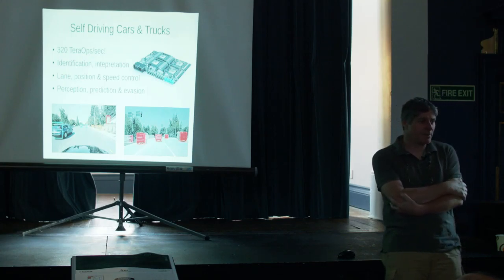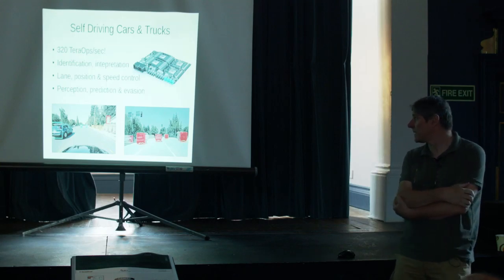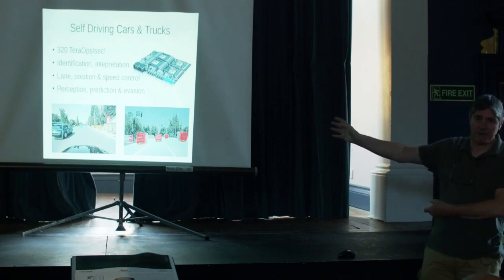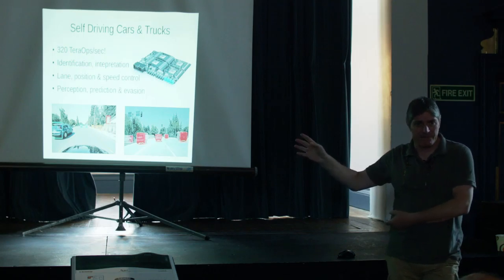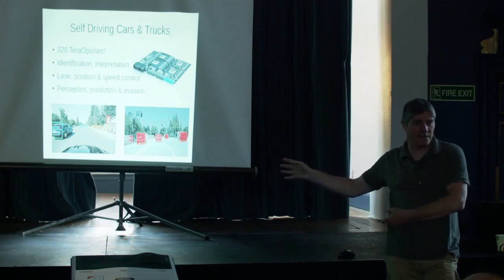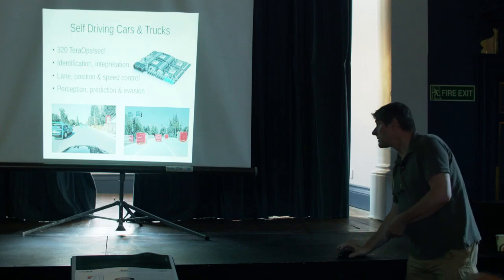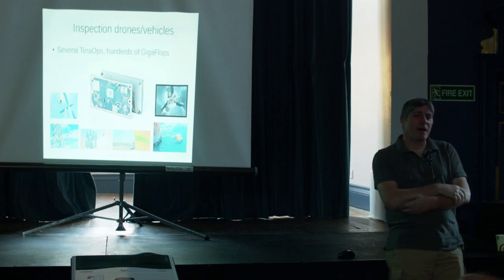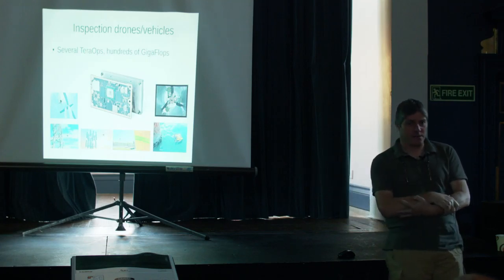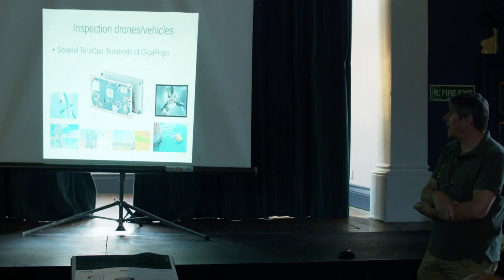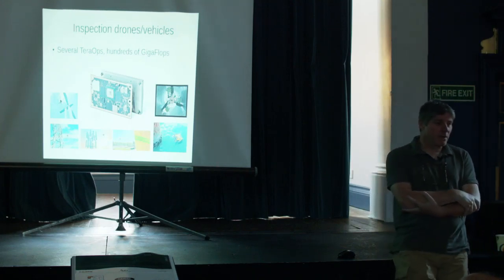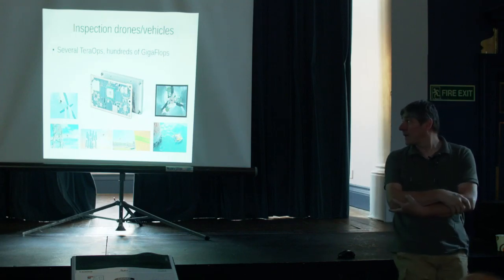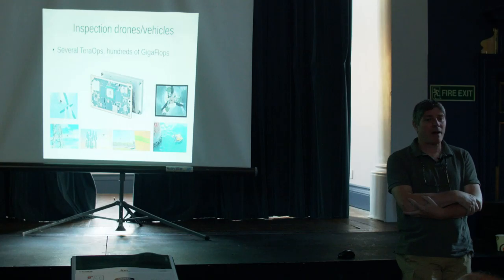It must also have perception and prediction — it needs to guess what's going to happen next, much like we unconsciously make decisions while driving. It needs safe evasion strategies where it doesn't run over people, animals, or kill its occupants. This is a massive market — every vehicle manufacturer you can imagine is spending millions of dollars here, as well as upstarts like Tesla and Google.